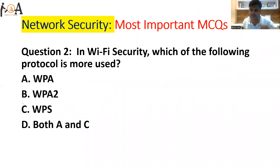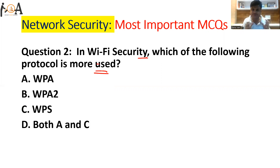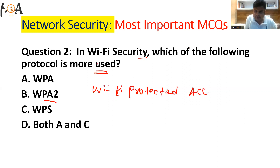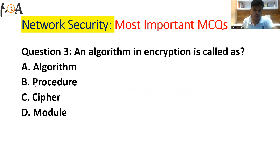Question number two: in Wi-Fi security, which of the following protocol is most used? Nowadays for security purposes we normally use WPA2 mode, also called the advanced version of WPA — that is Wi-Fi Protected Access 2. It is normally used much nowadays for security purposes, so option B is the correct answer.